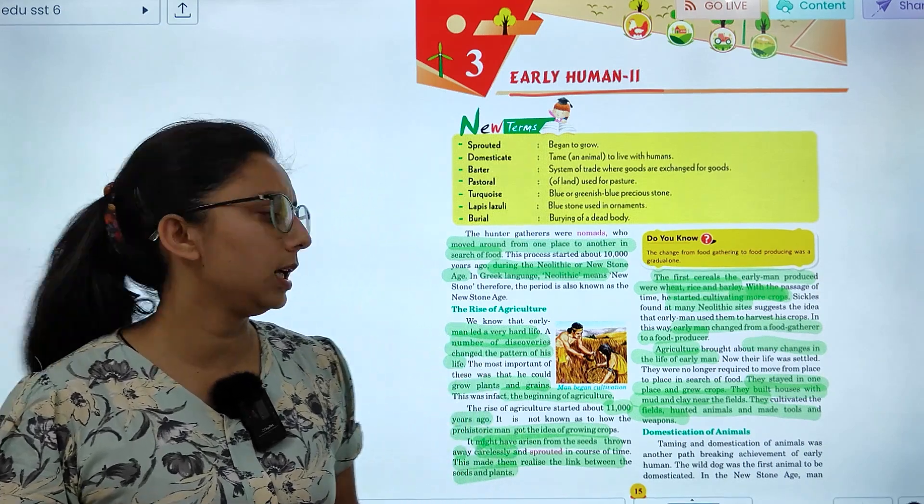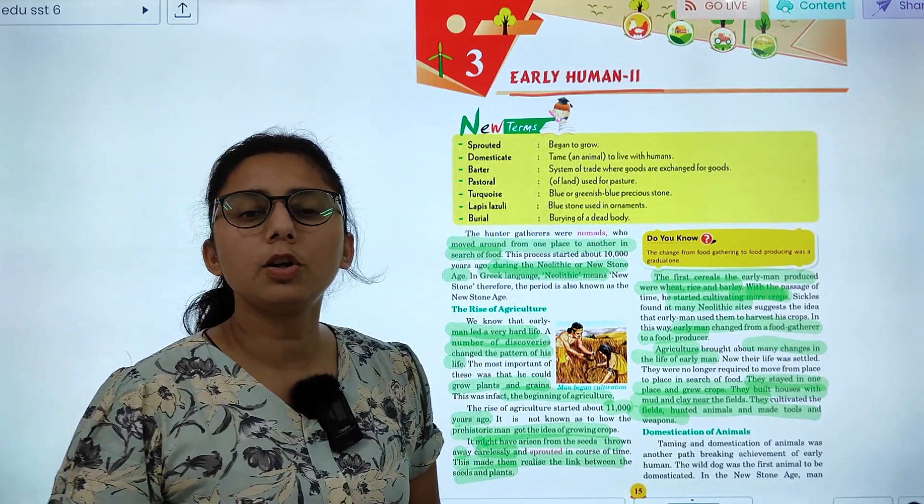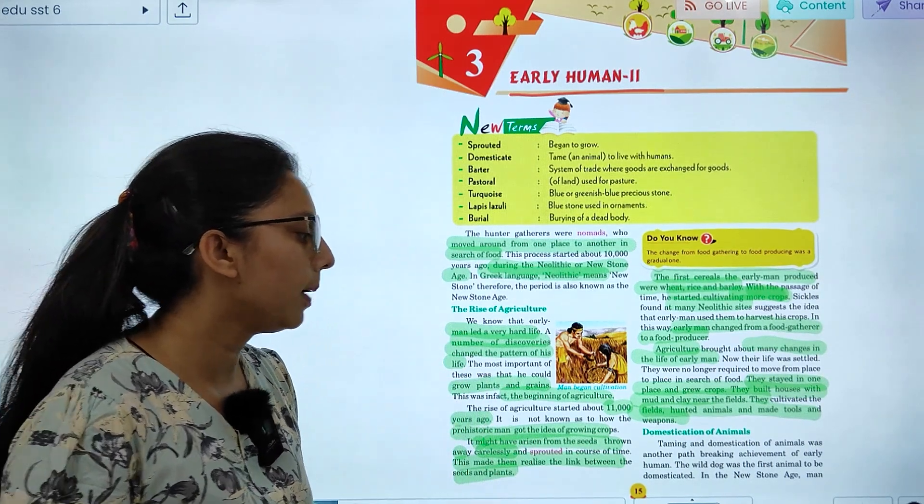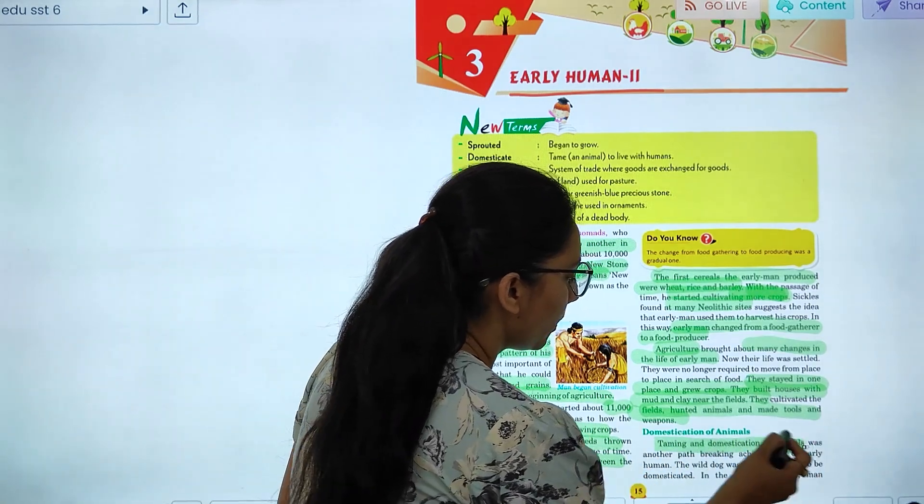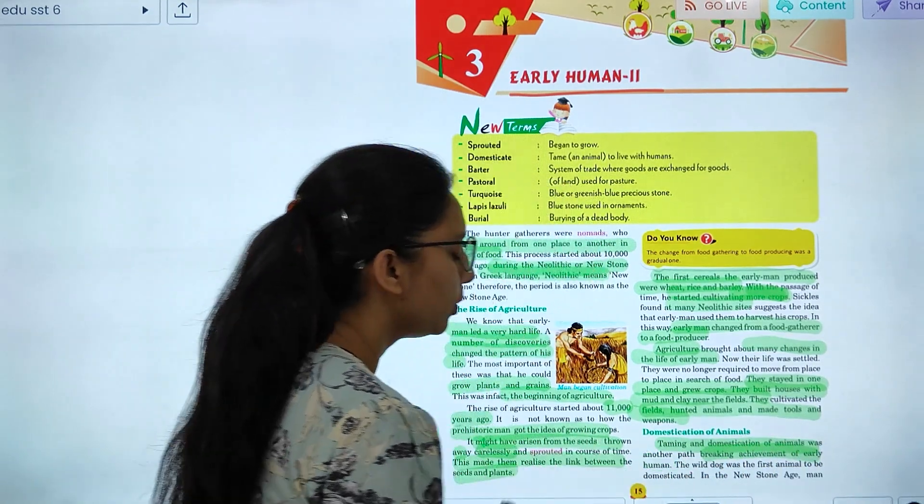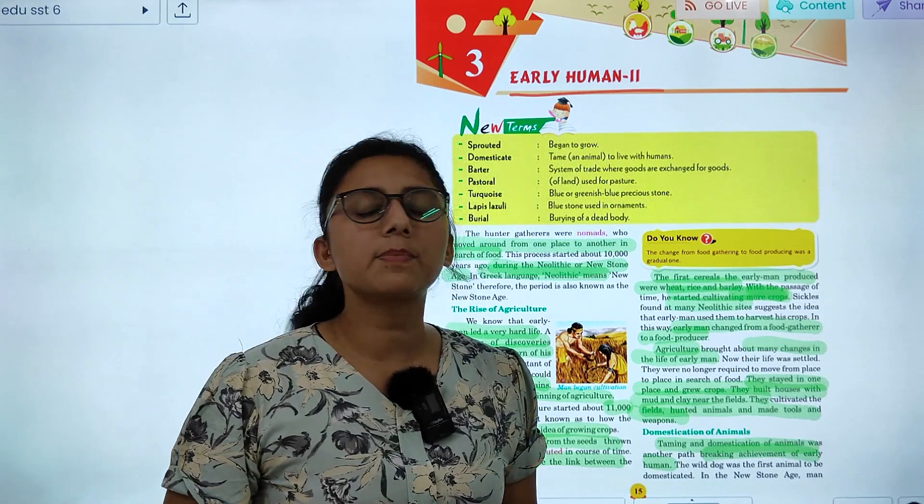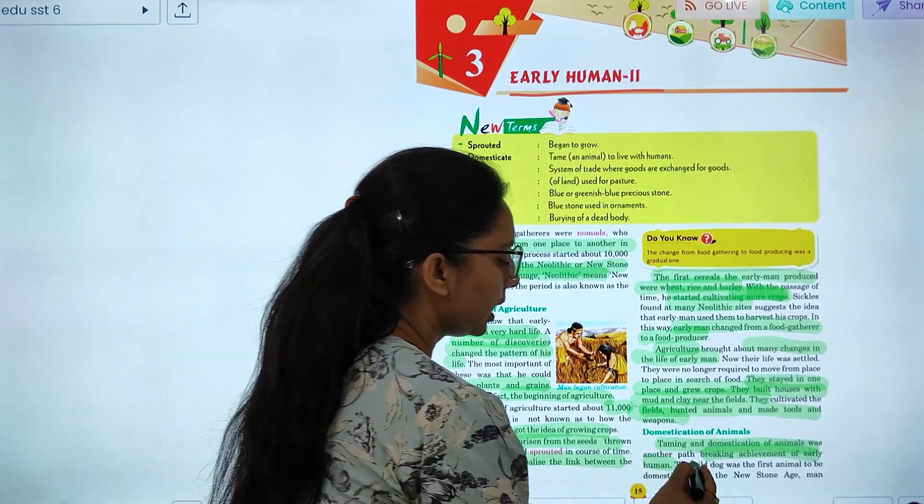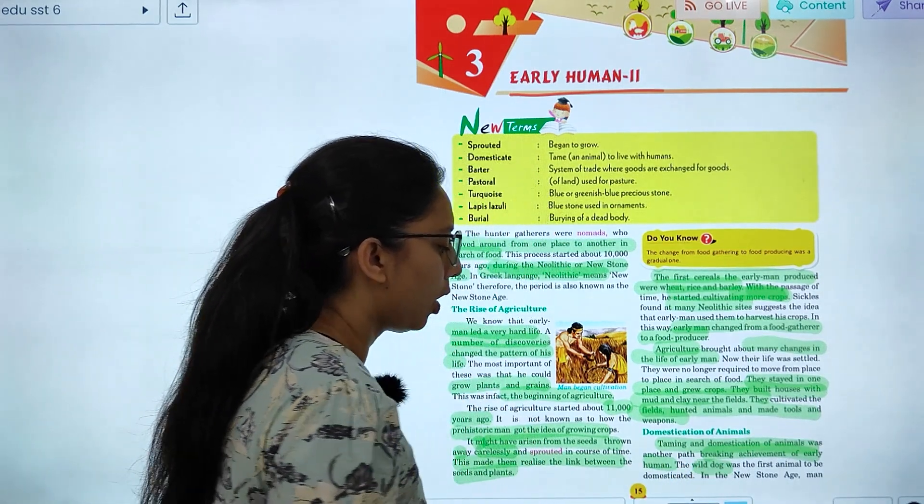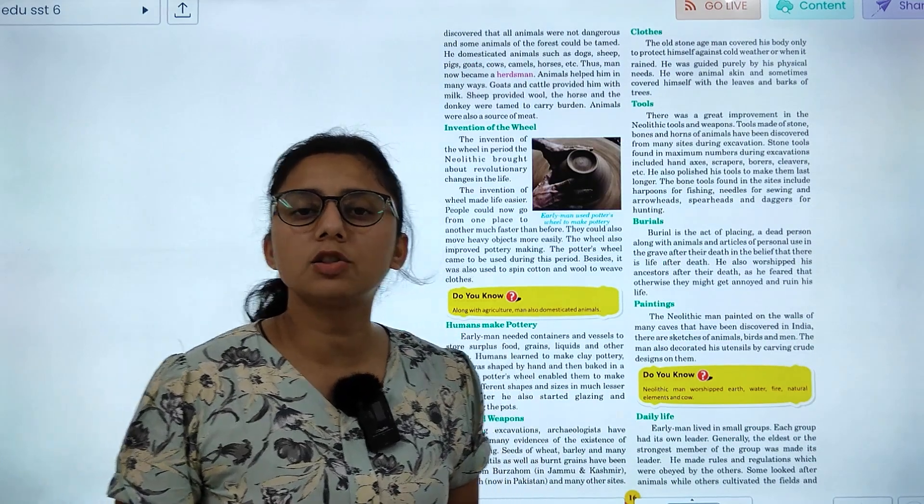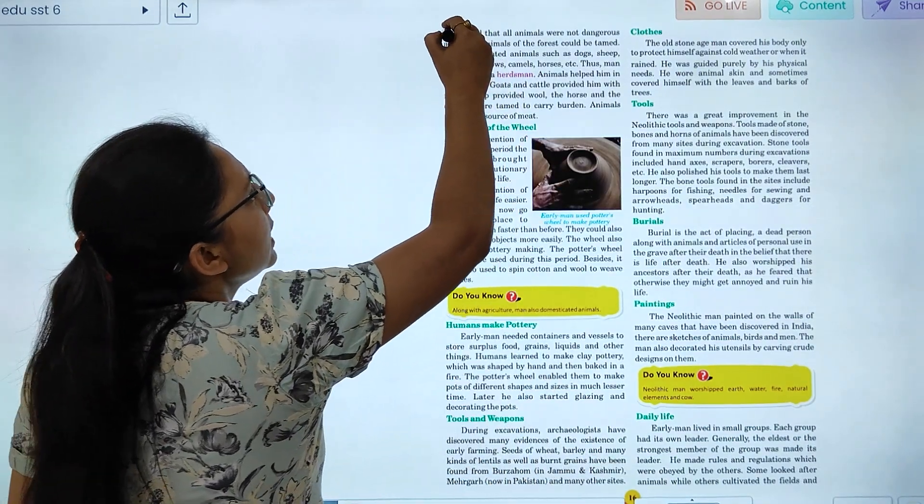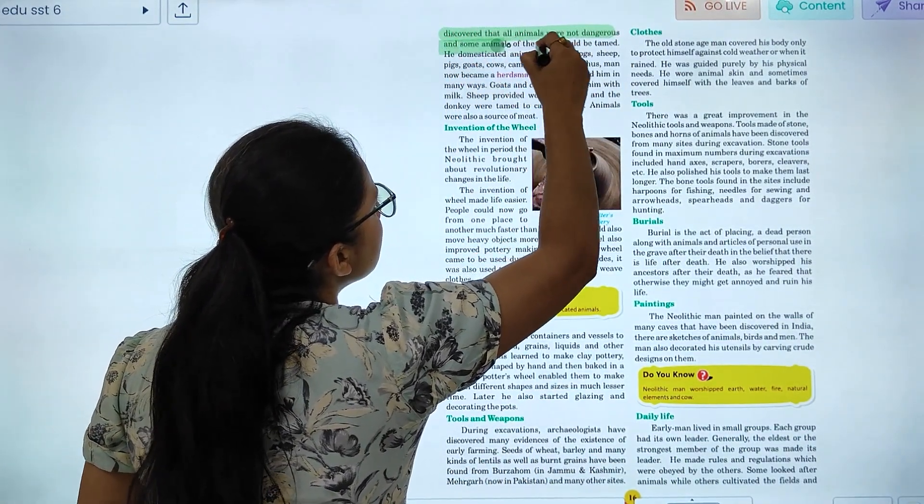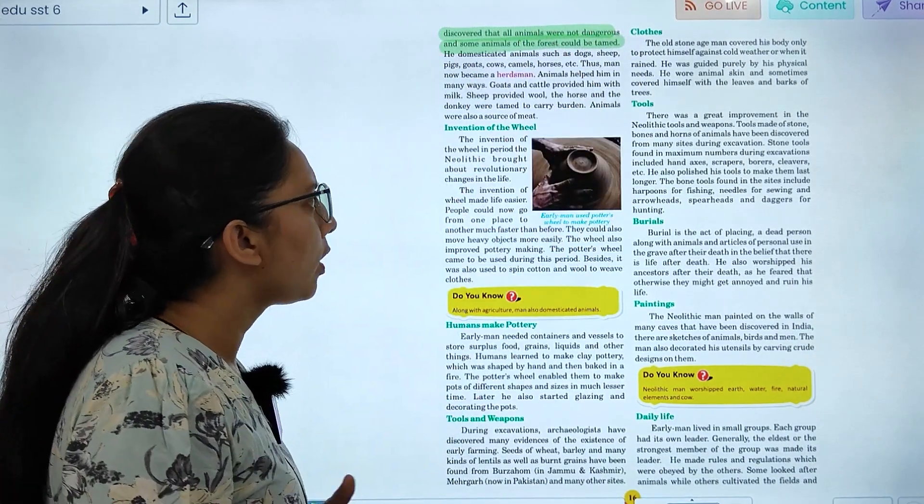They started domestication of animals. It was a great achievement in the building of life. The first animal that they domesticated was a wild dog. At the age of the Neolithic age, they discovered that all animals were not dangerous. They used to tame them from the forest.